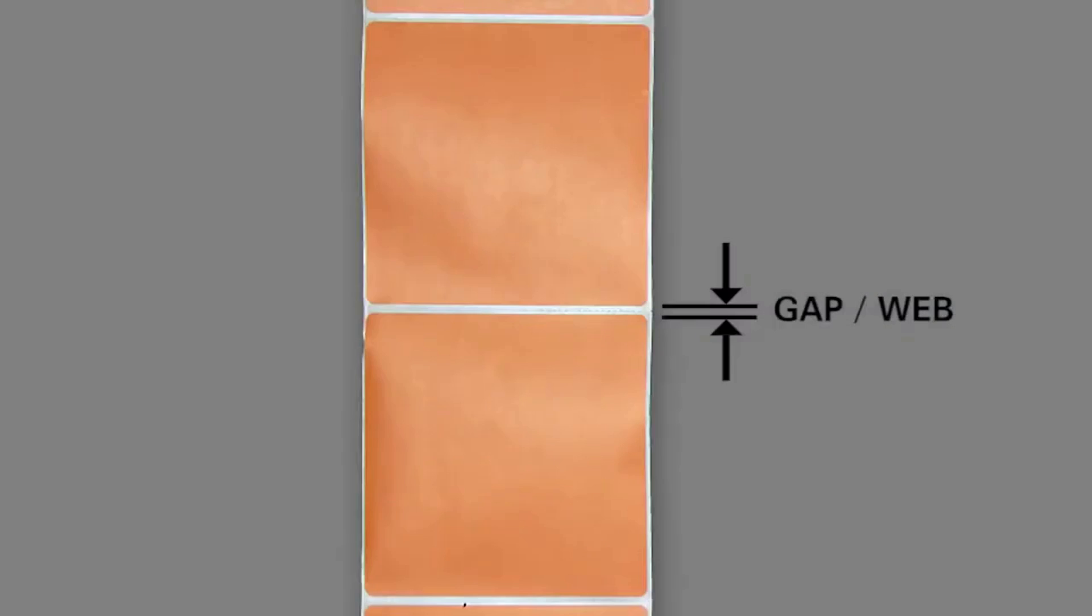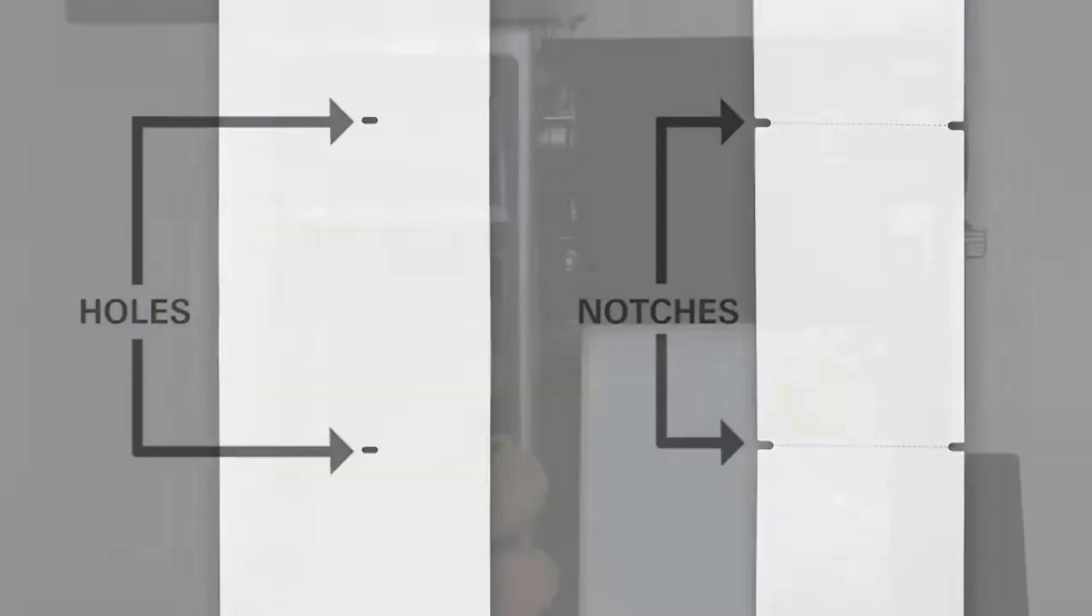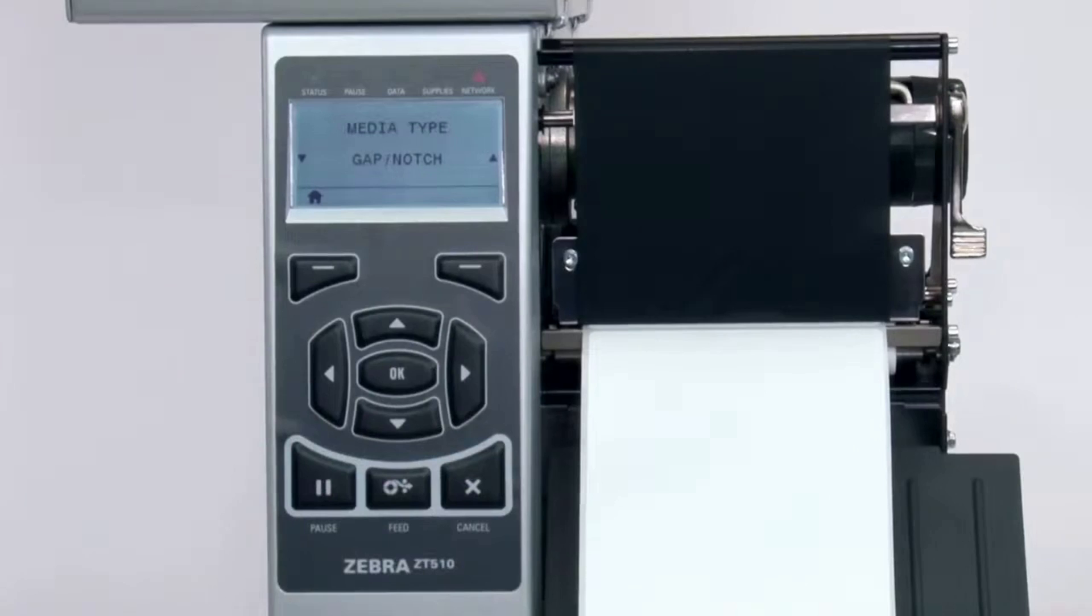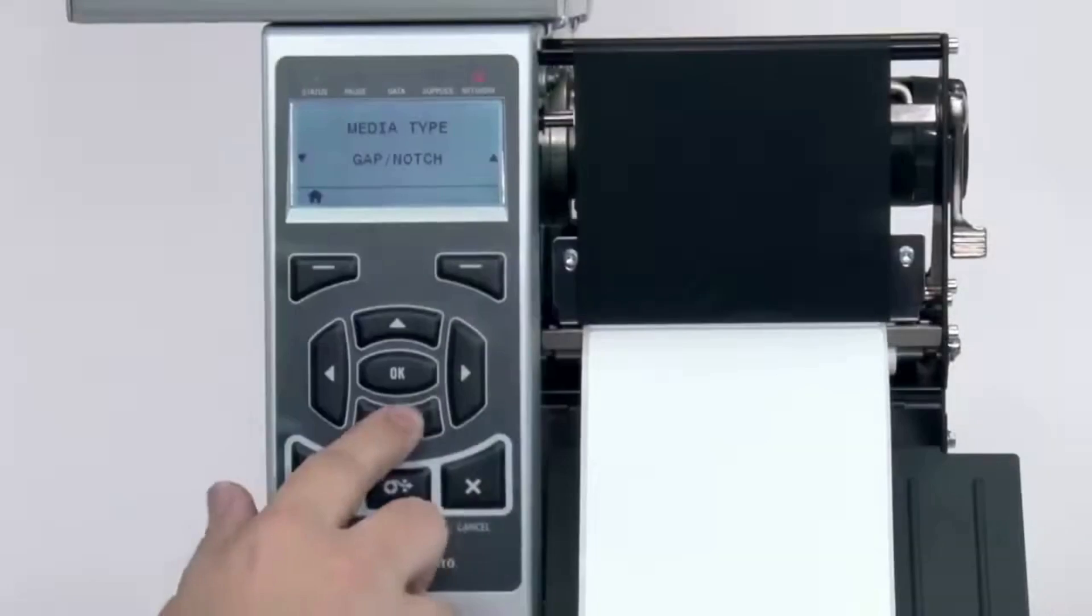If your media has a gap, also referred to as a web, or has holes or notches, select gap/notch in the menu. If your media has a black mark on the underside of the media, select mark in the menu.